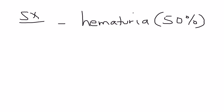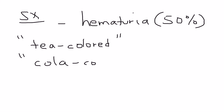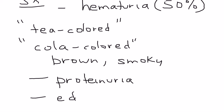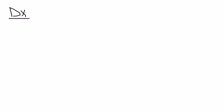The symptoms are related to kidney damage. About half of patients will have hematuria, and their urine will be a very characteristic color — not the standard yellow, but described as tea-colored, cola-colored, brown, or smoky. In addition to hematuria, the patient will also have protein in their urine, edema on physical exam, and high blood pressure due to kidney damage.